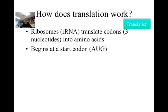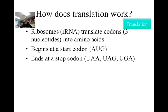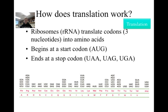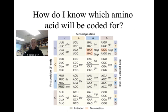Translation begins at a start codon, AUG, and it ends at a stop codon: UAA, UAG, or UGA. The other codons are translated into different amino acids as shown in the diagram. The black letters on the top represent all the possible codons, underneath is the three-letter abbreviation for the amino acid, and beneath that is the one-letter abbreviation. Notice that although there are 64 different codons, there are only 20 different amino acids, meaning that each amino acid is typically coded for by more than one codon.